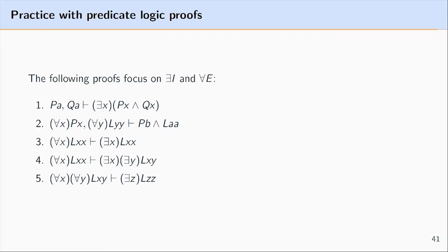This video aims to give you some practice with predicate logic proofs. I'll do five proofs that focus on existential introduction and universal elimination — the two inference rules that I consider to be the easier two of the four inference rules in predicate logic. What I won't do is explain what these rules are.